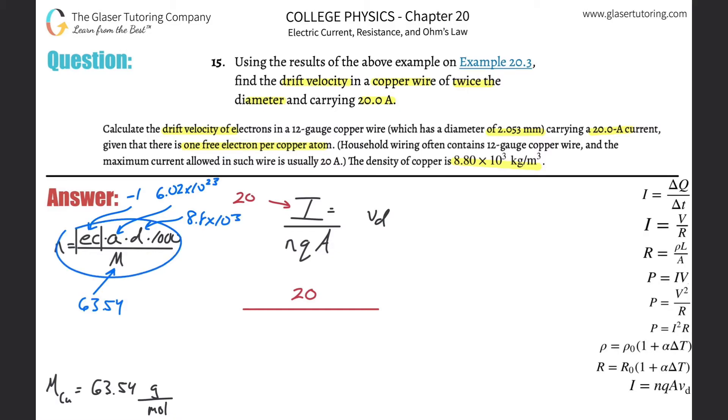And then all we have to do is just plug it on into the calculator. So we take one basically, multiply by 6.02 times 10 to the 23rd, multiply that by then 8.8 times 10 to the third, multiply that by 1000, and then divide it by 63.54. And here we get an electron density of about 8.34 or so times 10 to the 28th. And the units here would be number of electrons basically per cubic meter. That represents electron density.